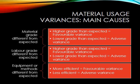Lastly our usage variance might be caused by new equipment or changes in methods of production. So for instance if we purchase a new piece of machinery and that makes us more efficient, that will likely see a favourable variance being caused. If however production methods become worse that will make us less efficient, and we are likely to see greater wastage and that will cause an adverse variance.